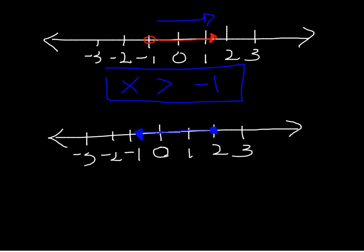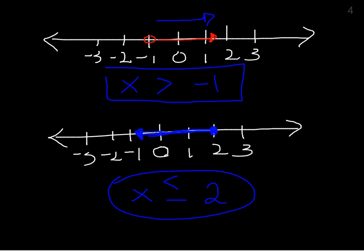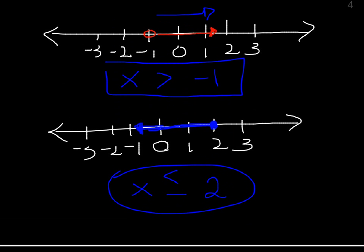Looking at the next one, we're starting at 2 — put 2 on one side and x on the other. The circle is filled in, so it's going to be or equal to as well. But it's going to the left, which means less than — showing all the numbers less than 2, and or equal to since it's filled in. So x is less than or equal to 2. Those are all the examples I'm going to do. If you have any questions, just let me know, and I'll see you guys tomorrow.